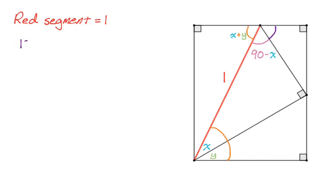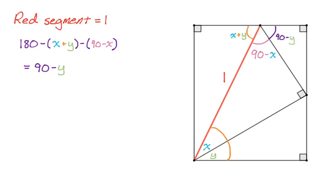I can also figure out that top angle. They should all add up to 180, so if I subtract x plus y and I subtract 90 minus x from 180, that will tell me the other angle. I end up with 180 minus 90 is 90, and then negative x minus y plus x is just negative y. So 90 minus y. Then the triangle on the right-hand side also has an angle of y right there because those two angles need to add up to 90.